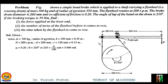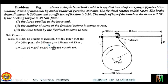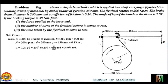Now let's start solving the problem. Given: mass m = 300 kg; radius of gyration k = 350 mm = 0.35 m; speed N = 200 rpm; diameter of drum = 260 mm, so radius R = 130 mm = 0.13 m; mu = 0.2; angle of wrap theta = 210° = 3.66 radians; and braking torque Tb = 39 Nm.